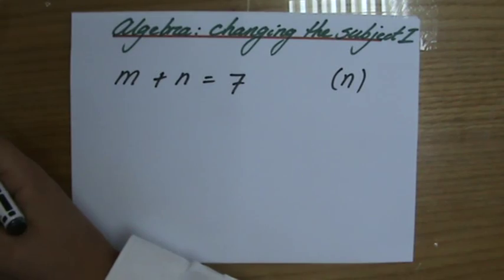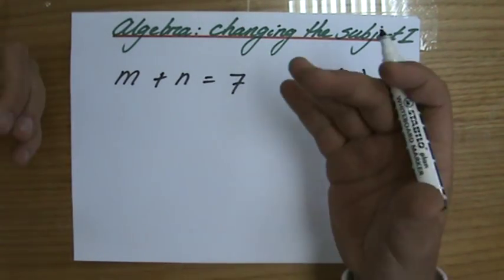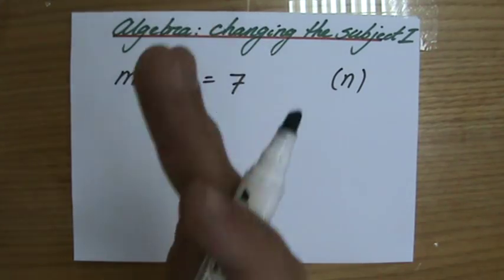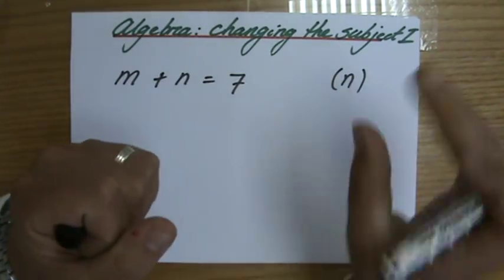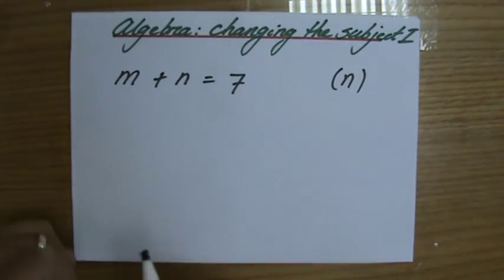Now, what does that mean? That means that I have to make it say n equals, and then everything else. So one n equals, and on the other side of the equal sign, all the other terms.